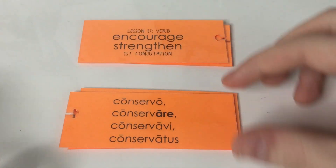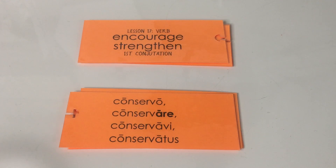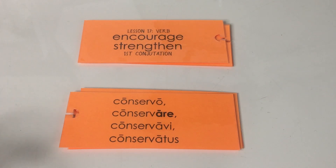Before we get to the next word, we actually have a few review vocabulary words. So even though in this lesson your vocabulary list looks a lot longer than it actually is, there are four different review vocabulary words we've already gone over before. The first one is do, dare, dedi, datus, which means give. Then we have adiuvo, adiuvare, which means help or aid. And then colloco, which means place or station. And then oppugno, which means attack, storm, or assault.